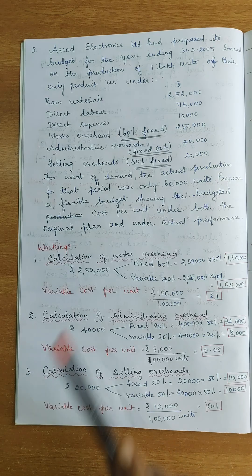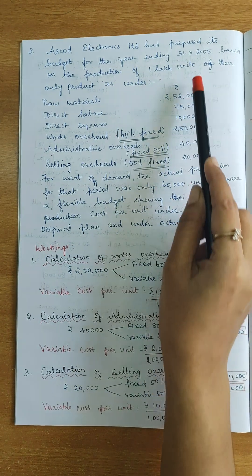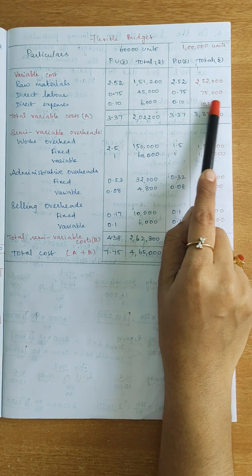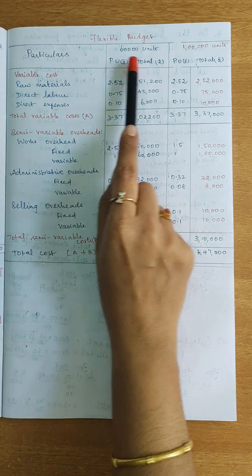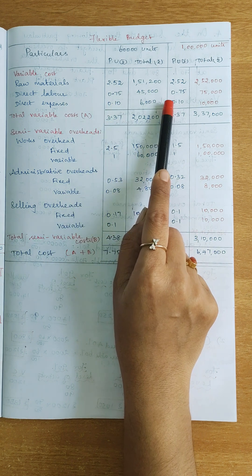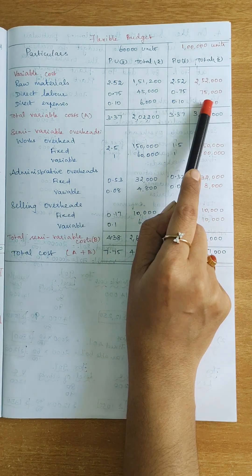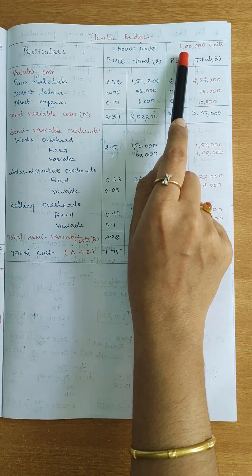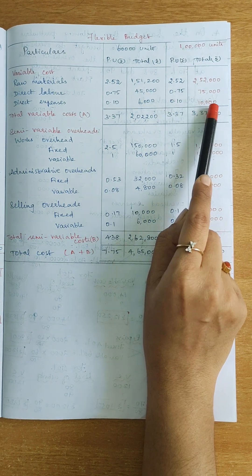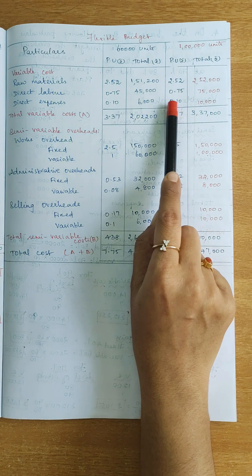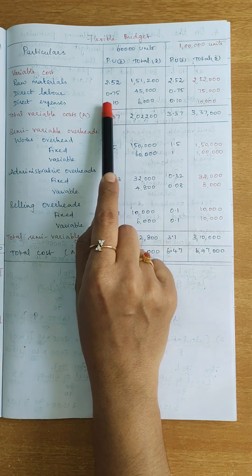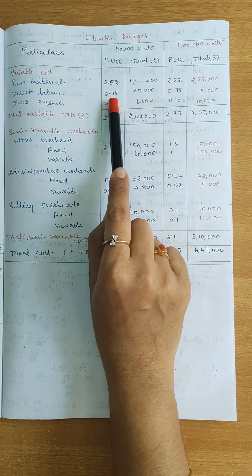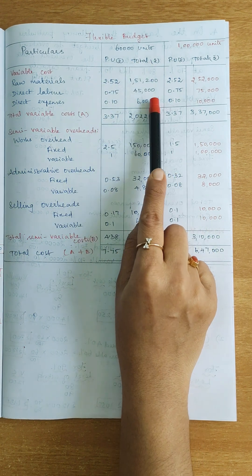Next is direct labour. Direct labour total is 75,000 for 1,00,000 units. For variable cost, cost per unit is the same at all levels of activity. So cost per unit = 75,000 divided by 1,00,000 = 0.75. For 60,000 units, cost per unit is also 0.75. Total = 0.75 × 60,000 = 45,000.